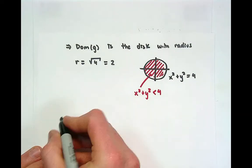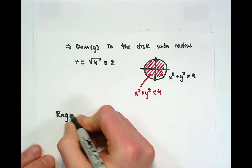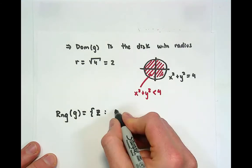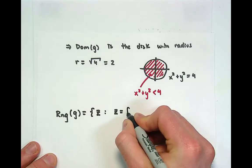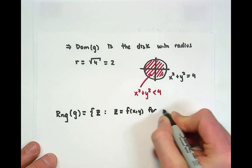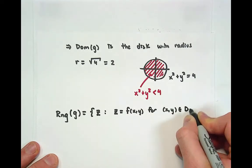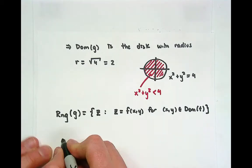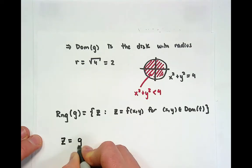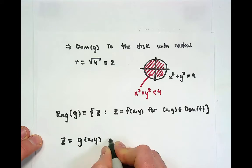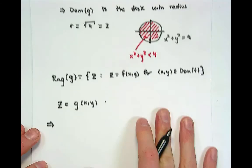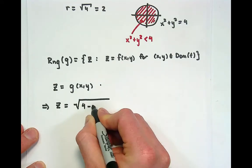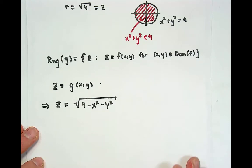Now let's look at the range of our function g, which we said was going to be the set of output values z such that z is equal to g of x comma y for x comma y element of our domain. How do we analyze this situation? We know that if z is equal to g of x comma y, this implies immediately that z is equal to the square root of 4 minus x squared minus y squared by the original definition.